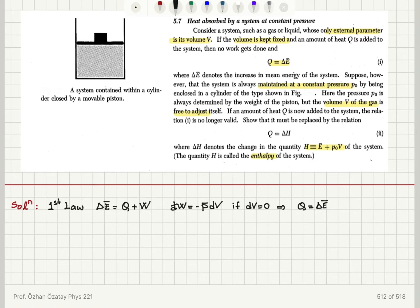Now if P is kept constant, if P bar is equal to P0, then I can calculate the work done on the system using a quasi-static process. The integral from initial volume to final volume of P0 DV will be equal to minus P0 times delta V, which is V final minus V initial.